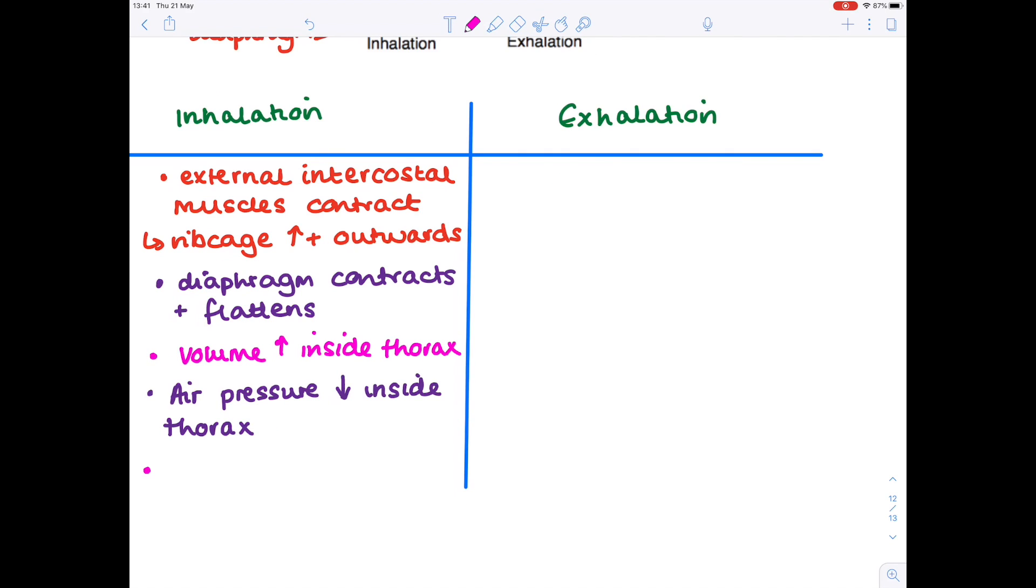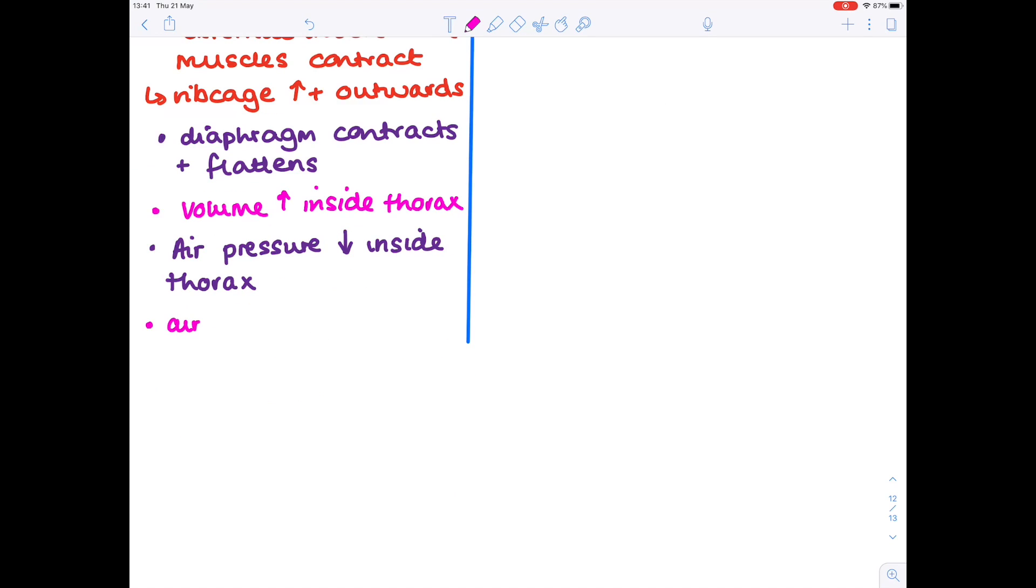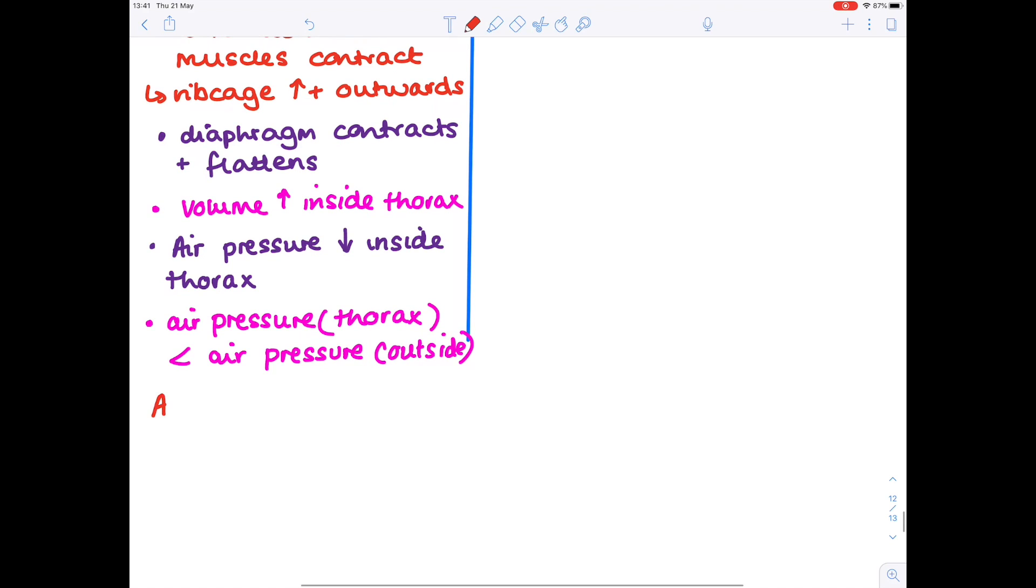And so at this point, you can make a comparison between the air pressure within the thorax compared with the outside atmospheric air pressure. And that is that the air pressure inside the thorax is less than the air pressure outside. And this has the knock-on effect of meaning that air enters the lungs.